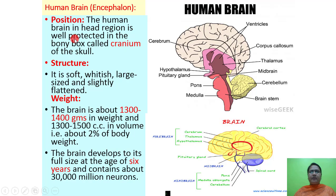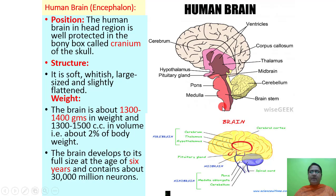Looking at this figure of the human brain, we can see it is divided into three parts: forebrain, midbrain, and hindbrain. The human brain is located in the head region. It is well protected in a bony box which is called as a cranium or the skull.